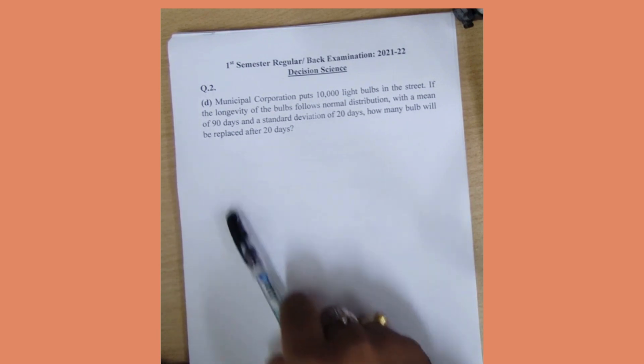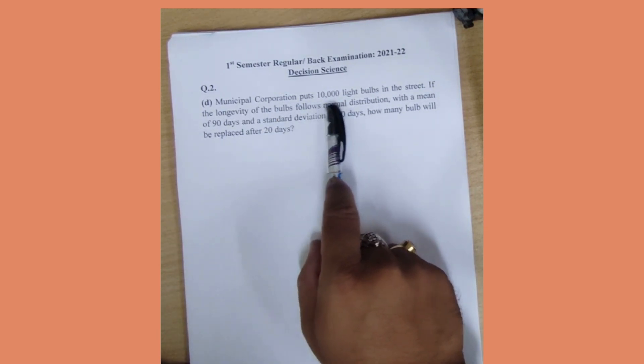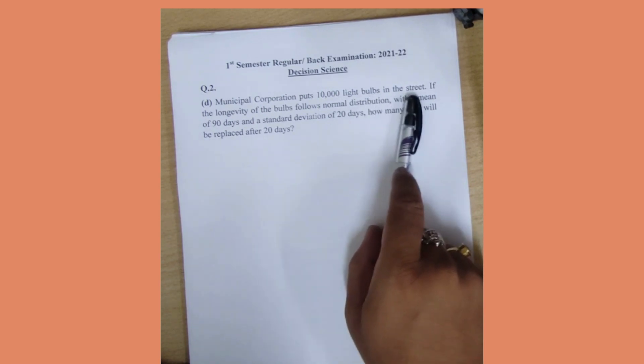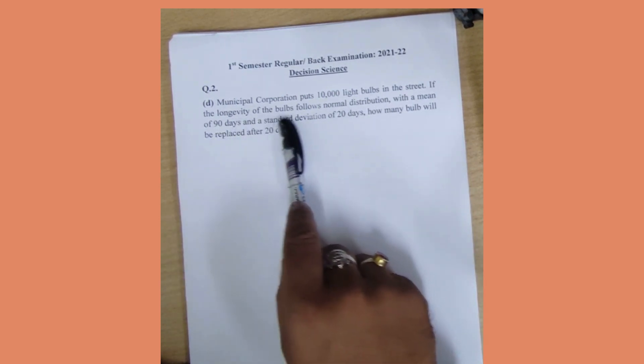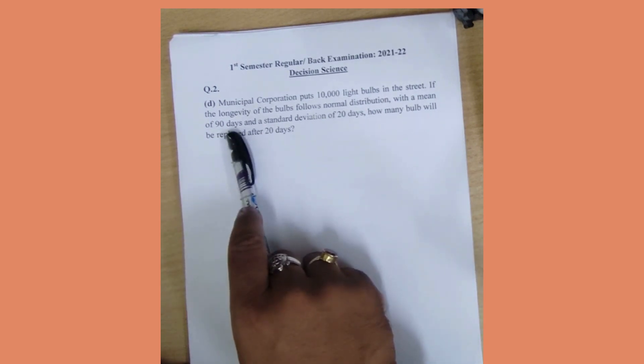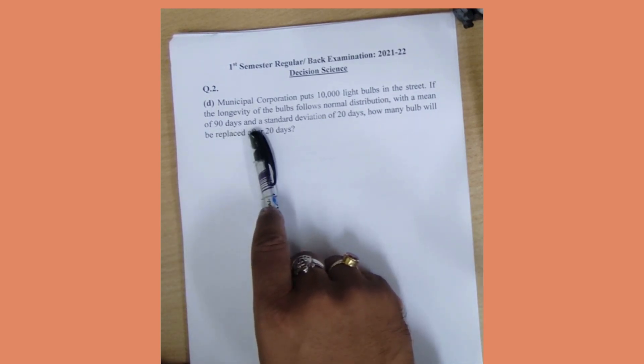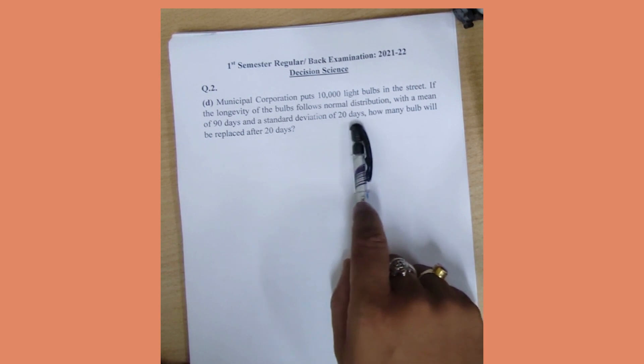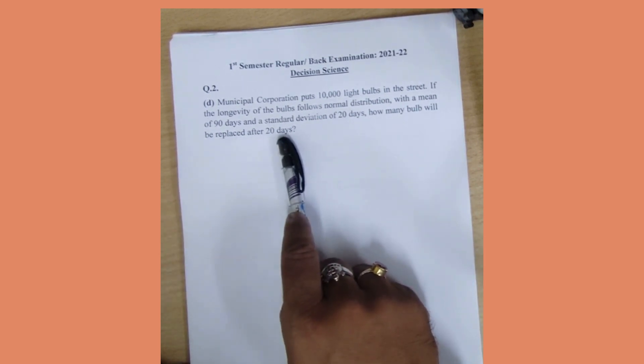First, the problem is that the municipal corporation puts 10,000 light bulbs in the street. If the longevity of the bulb follows the normal distribution with a mean of 90 days and the standard deviation of 20 days, how many bulbs will be replaced after 20 days.